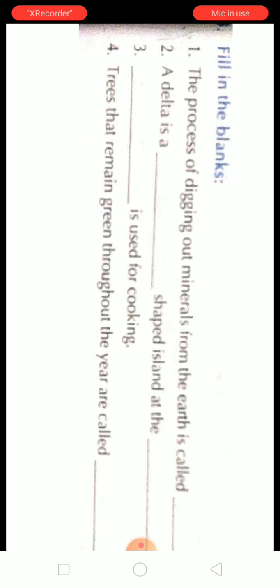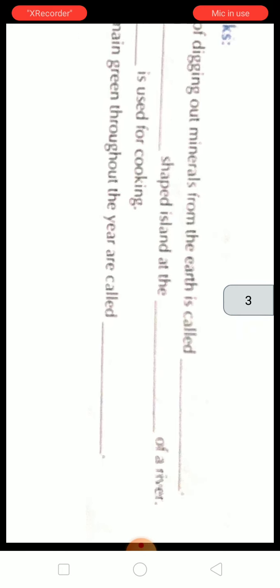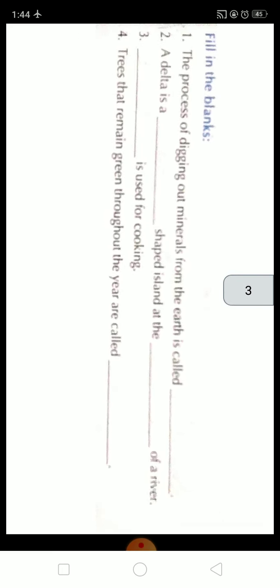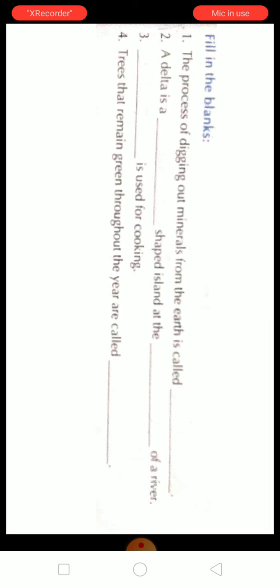Second is, a delta is a blank shaped island at the blank of a river. Delta yaani jo aapne padha hai, that some of the sediments are carried by the water to the mouth of the river. These get deposited in triangular shaped island. That triangular shaped island at the mouth of a river. So in the first blank you have to fill, a delta is a triangular shaped island at the mouth of a river.